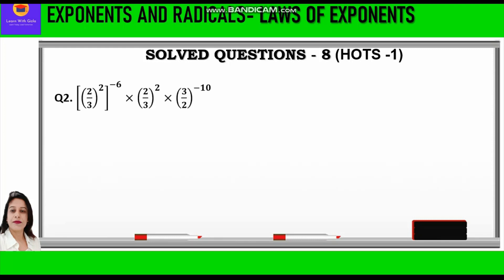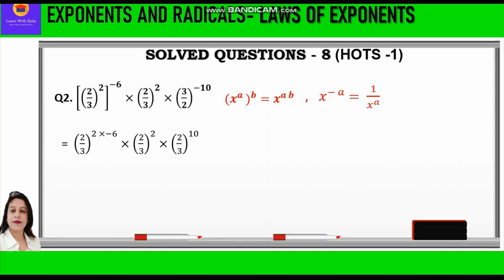Question 2: in a box bracket we have 2 by 3, whole raised to power 2, and outside we have minus 6, into 2 by 3 whole raised to power 2, into 3 by 2 whole raised to power minus 10. When we have two powers inside and outside we multiply both. For negative exponent we reciprocate the base. Applying both laws, we write 2 by 3 raised to power 2 into 2, into minus 6, into 2 by 3 raised to power 2, into 2 by 3 raised to power 10.